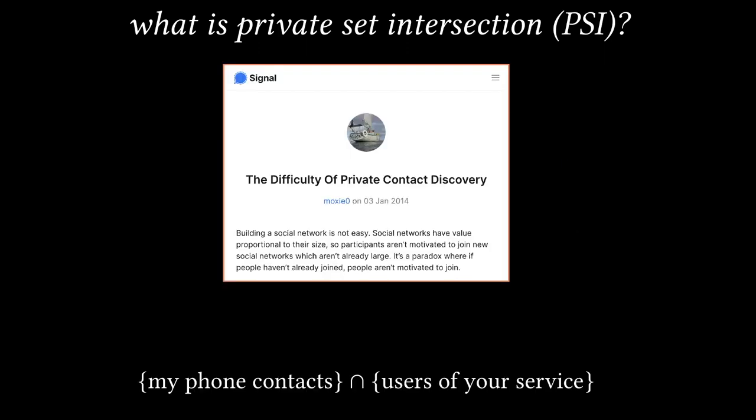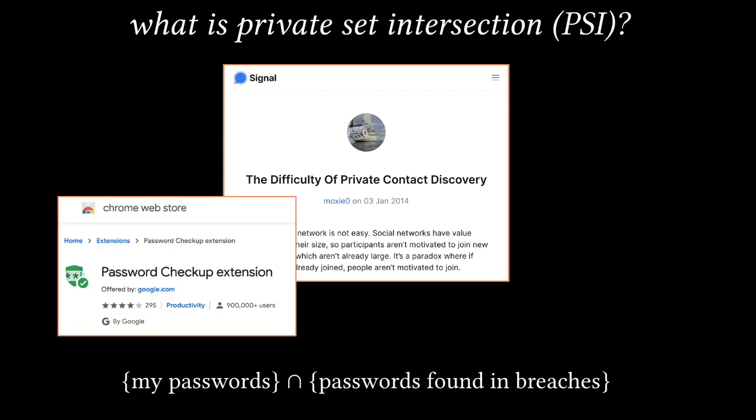PSI has several nice applications. For example, if I sign up for a new encrypted messaging service, I'll probably want to know which of my friends already use the service. The information that I want is the intersection of my phone's contact list and the service provider's list of clients. I can use PSI to compute this intersection without sending my contact list to the service. As another example, Google has a service for the password manager in Chrome, where any user can learn which of their passwords have appeared in a breach. Again, this is an intersection computation that can be performed with PSI, so no one has to send all their passwords to Google.